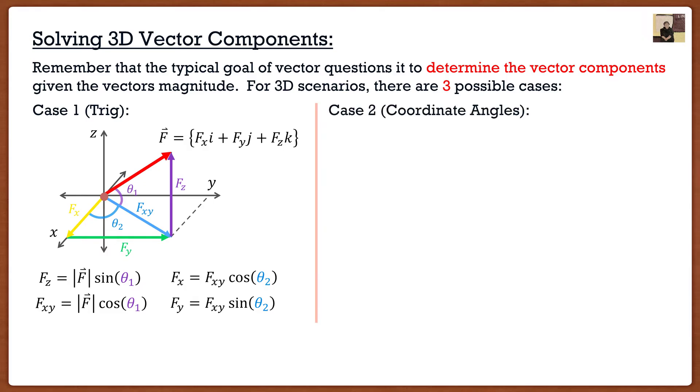Now the second case is what I call the coordinate angles case or the coordinate direction angles and this is going to be the easier case. This is when they give you a force vector in 3D and they're very generous and give you the three coordinate direction angles. If this is the case, this is a joke.